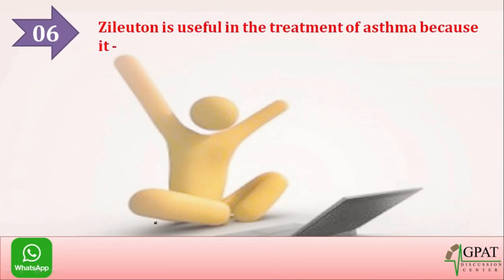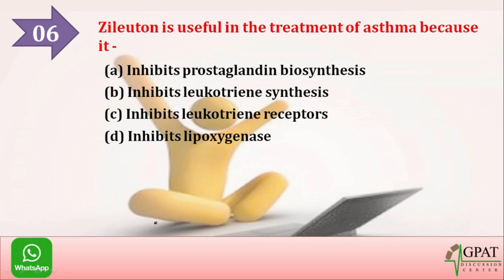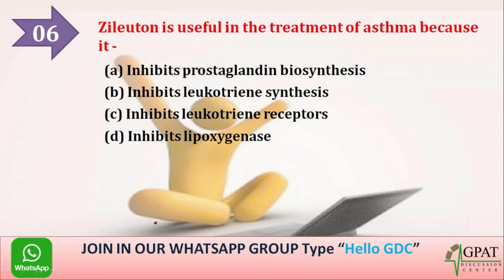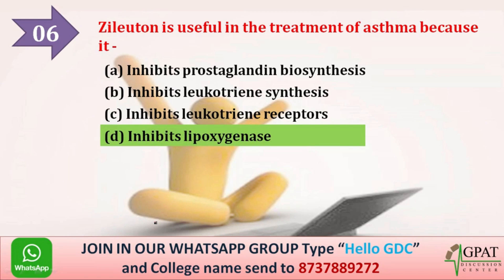Next question: Zileuton is useful in the treatment of asthma because it — option A inhibits prostaglandin biosynthesis, option B inhibits leukotriene synthesis, option C inhibits leukotriene receptors, option D inhibits lipoxygenase. The correct answer is it inhibits lipoxygenase.